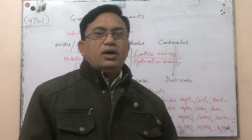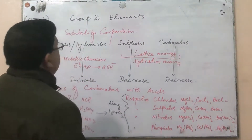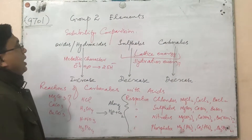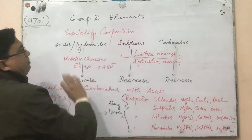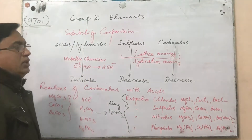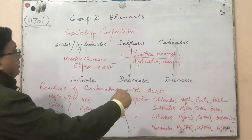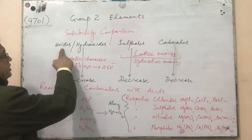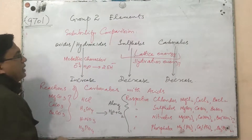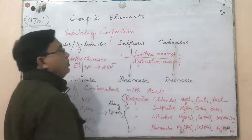Hello everyone. Our today's A-level chemistry topic is Group 2 elements: solubility comparisons between the compounds of Group 2 elements. These compounds are oxides or hydroxides, then sulfates, and then carbonates.